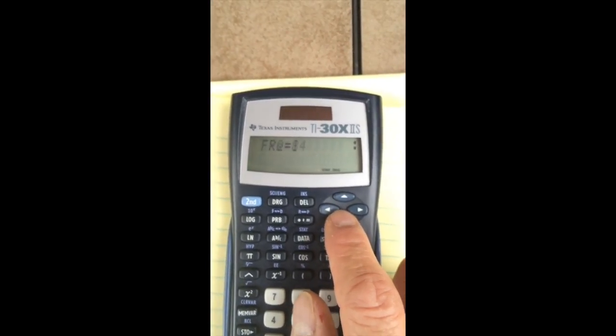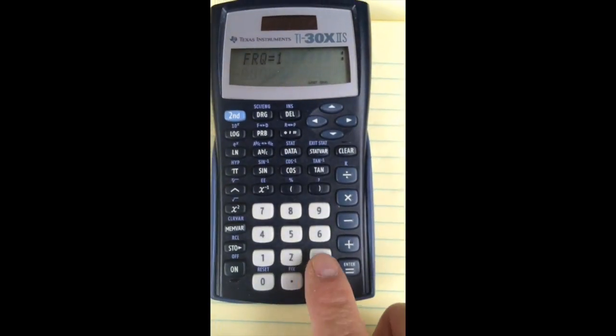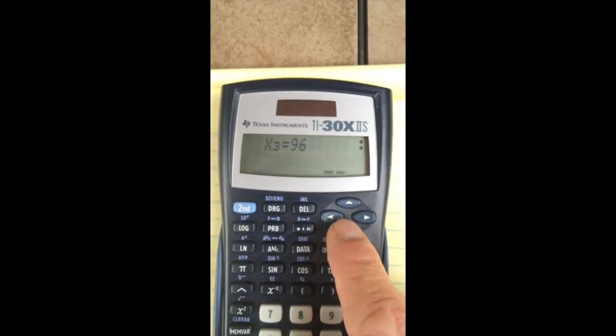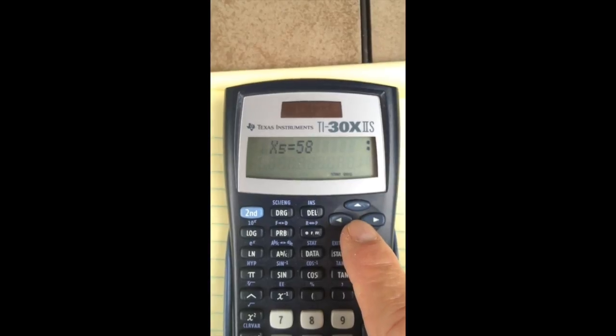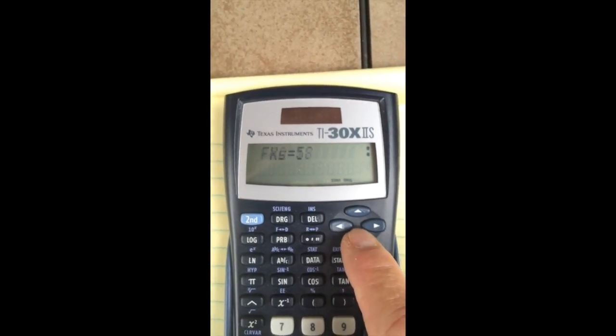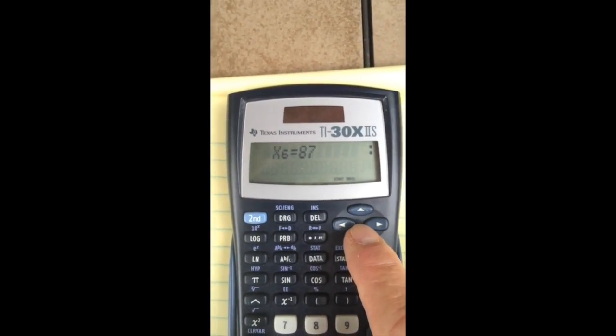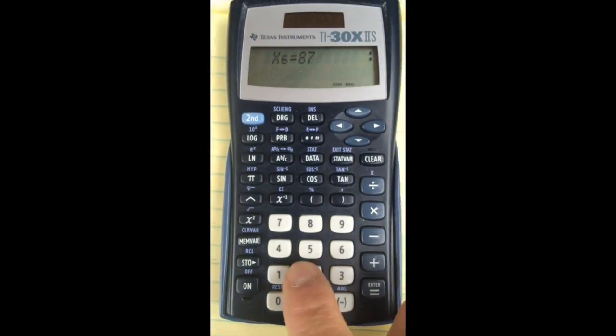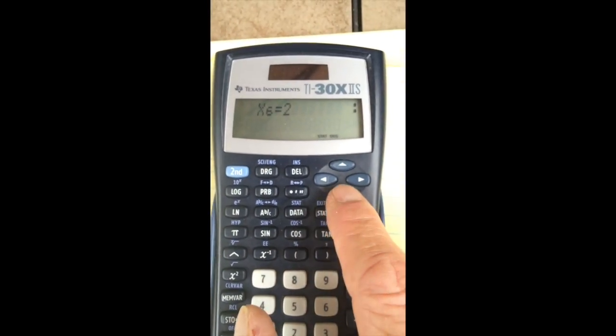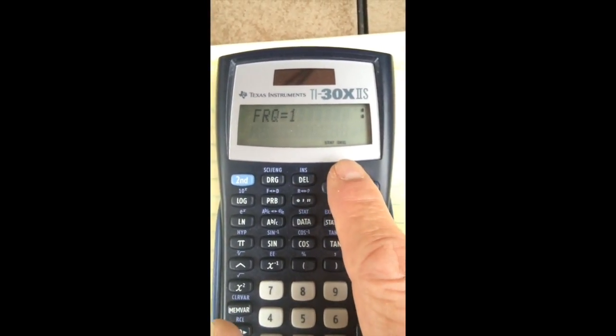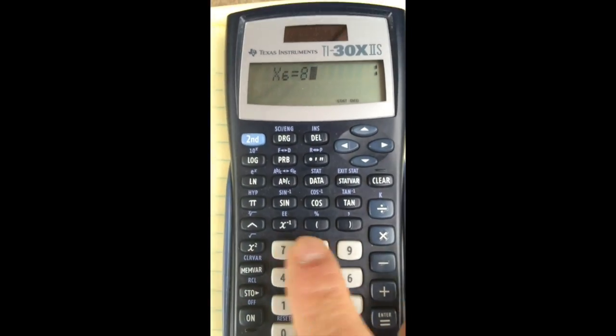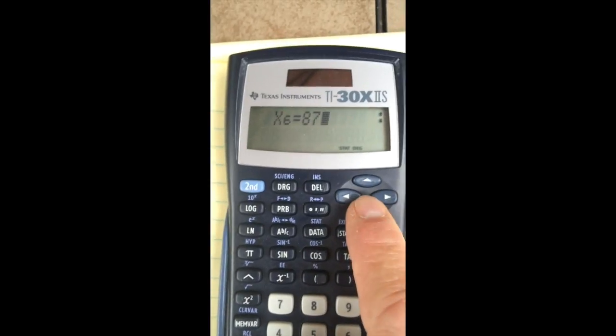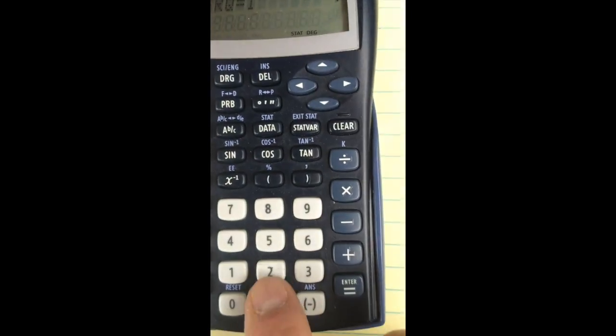The next number, 84, maybe I had three of those. 96, only one of those. 94, only one. 58, good thing, only one of those. 87, maybe two people had an 87.